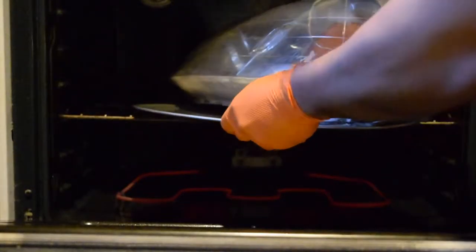Set it for 200 and wait for it to preheat. Put your headlight on a tray and make sure that none of it touches the actual oven. And you'll set a timer for 9 minutes.